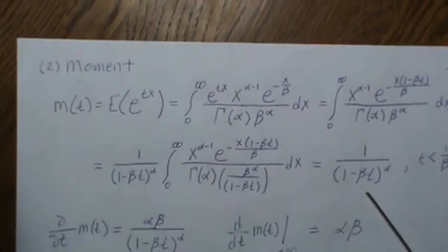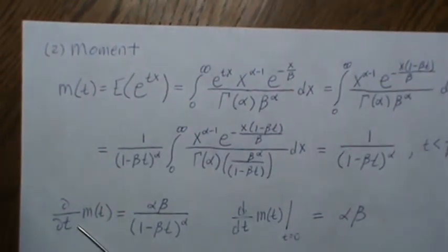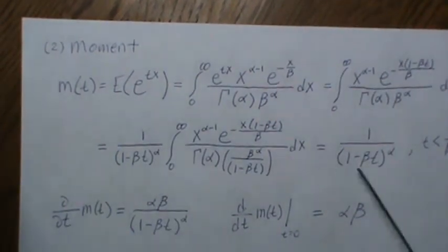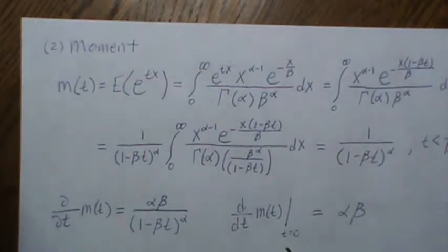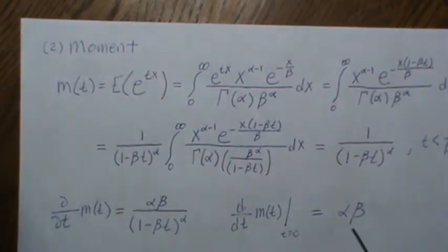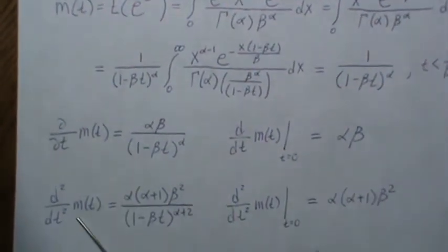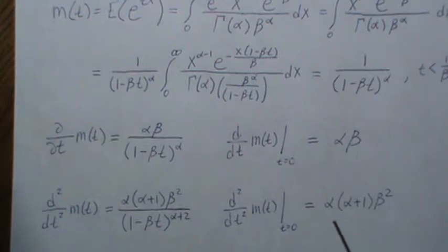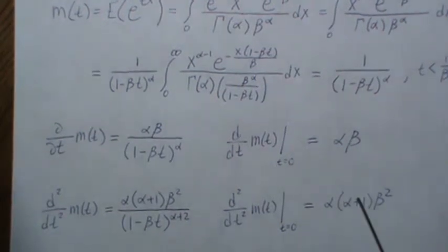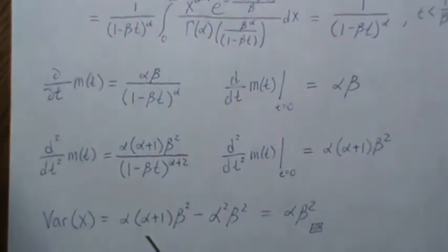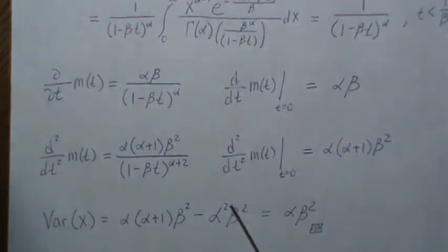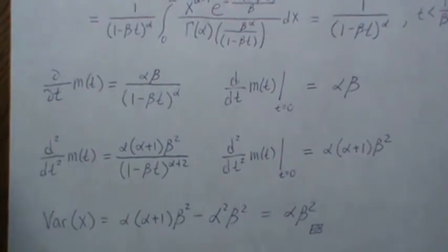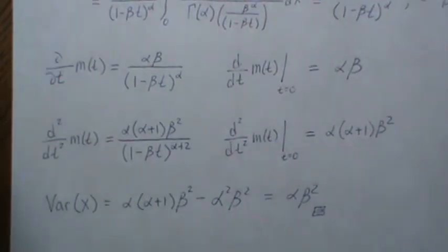And again, if you notice, if you take the first derivative of this, you get that and then evaluated at zero, you get alpha beta. So that's the first moment. Take the second derivative, you get this evaluated at zero and you get this, and that's the second moment. And again, the expected second moment minus the first moment's quantity squared, you get alpha beta squared. So that's the same result.